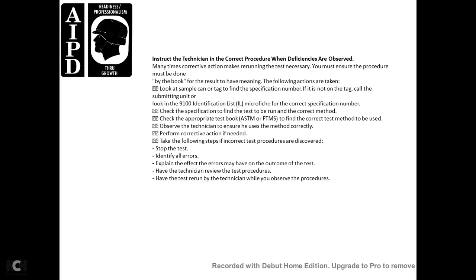Observe the technician to ensure correct use of the test method. If corrective action is needed, take the following steps: stop the test; identify all errors; explain the effect the deficiencies may have on the outcome of the test; have the technician review the test procedure; then have the test rerun while the technician observes the procedure.